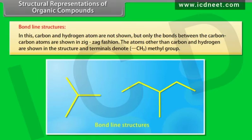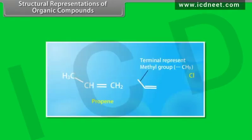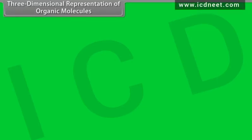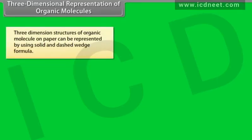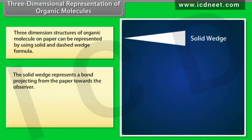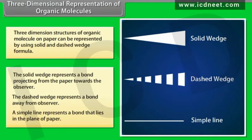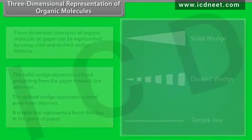The atoms other than carbon and hydrogen are shown in the structure, and the terminals denote the methyl group. For example: butyl chloride, propene, cyclohexane, diethyl ether, dimethylamine. Three-dimensional structures of organic molecules on paper can be represented using solid and dashed wedge formulas. The solid wedge represents a bond projecting toward the observer; the dashed wedge represents a bond away from the observer; a simple line represents a bond in the plane of the paper. For example, methane.